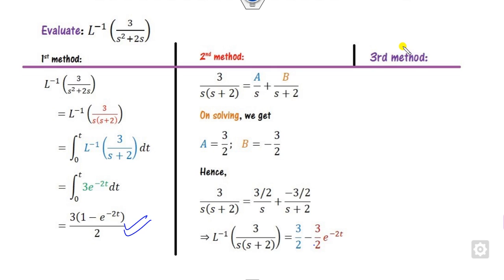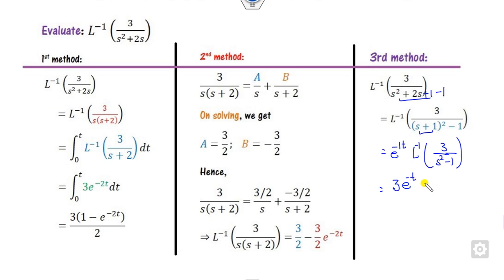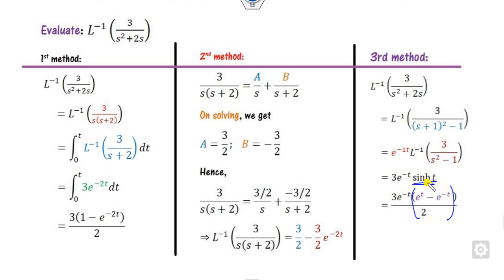The third way is completing the square: add plus 1 and minus 1. This results in a shift, giving 3/(s² - 1). Taking 3 outside, the Laplace inverse corresponds to the standard form — since the sign is negative (not positive), this is sinh(t) rather than sin(t). Expanding sinh(t) gives the same expression as the previous methods.